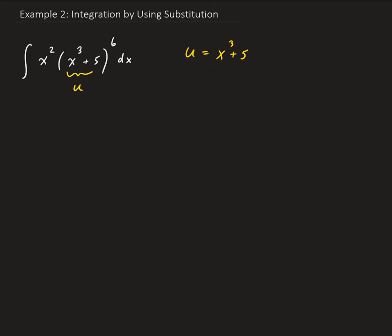From here, we're going to take the derivative of u with respect to x. So we have 3x squared, and so this is the same as du equals 3x squared dx.